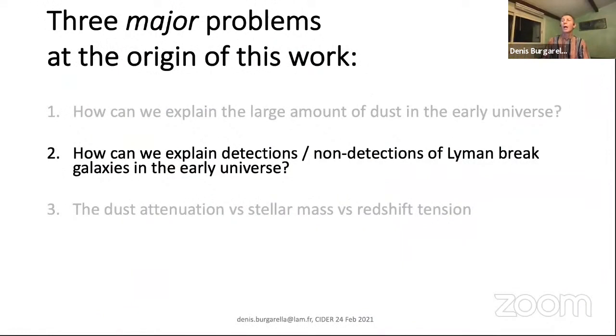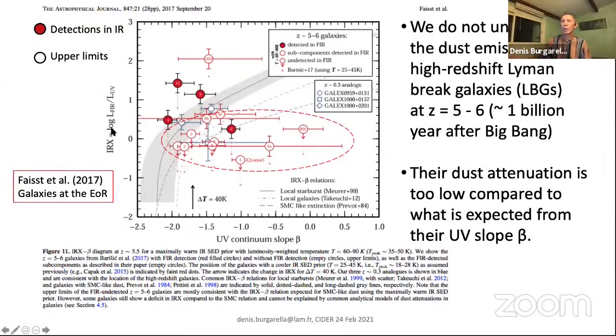The next point is how can we assess this. This is quite important. You see here in this diagram where you have the IRX, infrared to UV luminosity ratio as a function of the beta slope. In the redshift range five to six, you have a few detections but many more non-detections. The objects that are not detected have at the same time very low dust attenuation but are quite red, and of course we want to understand why.